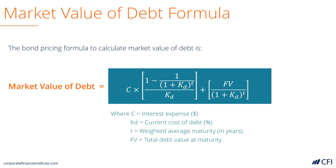C is the interest expense in dollars. KD is the cost of debt in percentage. T is the weighted average time to maturity in years. And FV is the future value, or value of debt at maturity.